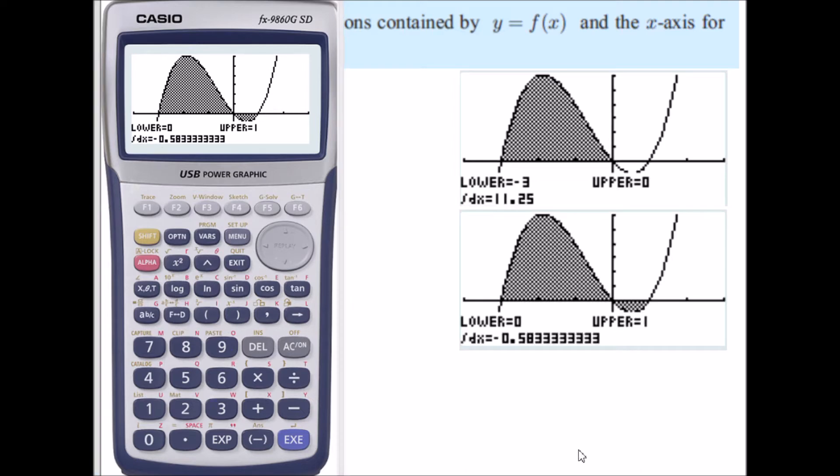So if we wanted the area between the polynomial and the x-axis we could add that value to the negative of this value here to get 11.7, 11.8 units.